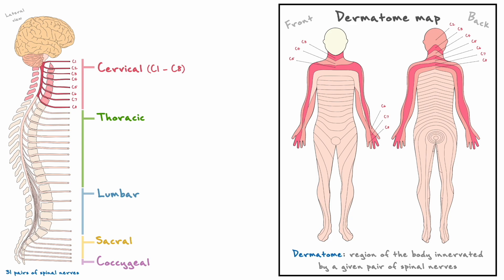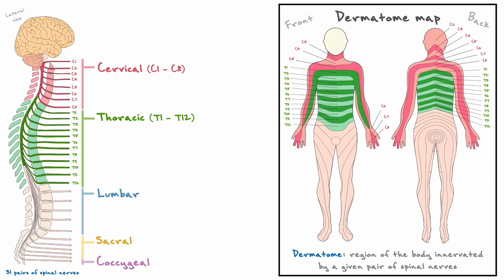The following section, thoracic, represents the chest region and it has 12 of the 31 spinal nerve pairs. In a similar fashion to the labeling of the cervical region, these 12 pairs of nerves are referred to as T1 to T12. The thoracic sections generally cover the upper back, the majority of the torso, and a portion of the arms.